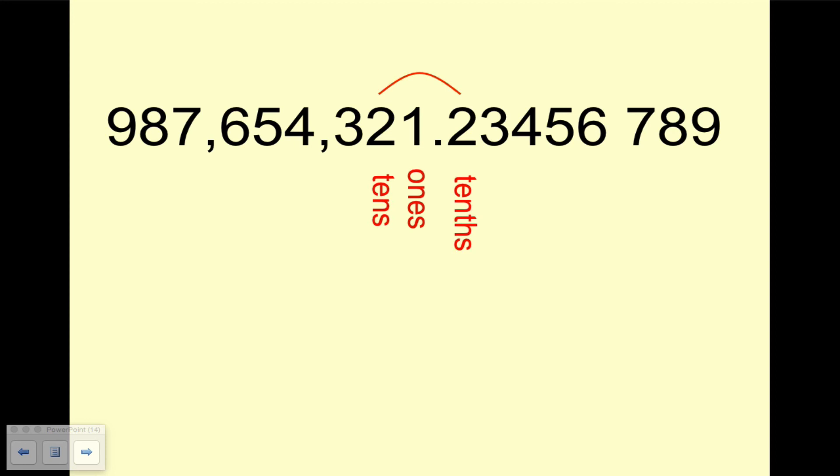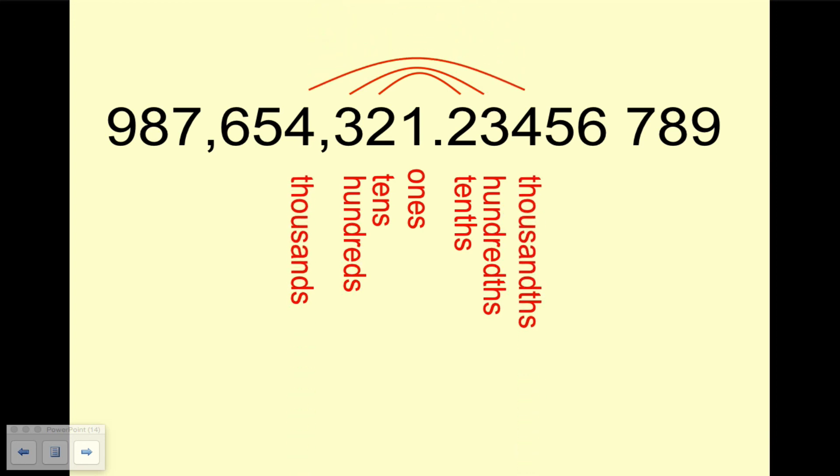So after ones and tens comes hundreds and hundredths. Then thousands and thousandths. Ten thousands and ten thousandths. And the pattern continues with balance. So we'd have a hundred thousands and hundred thousandths. Millions and millionths. And so on.